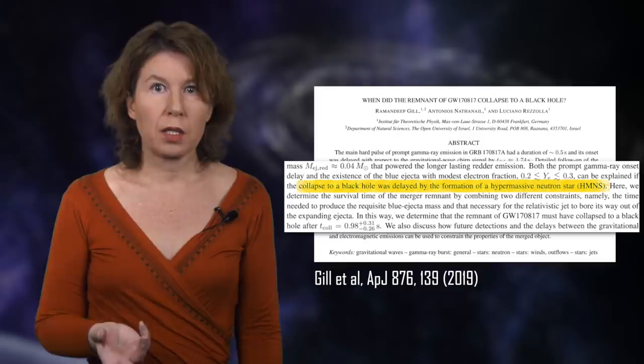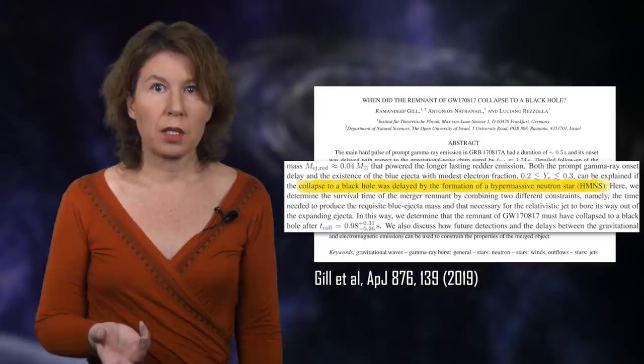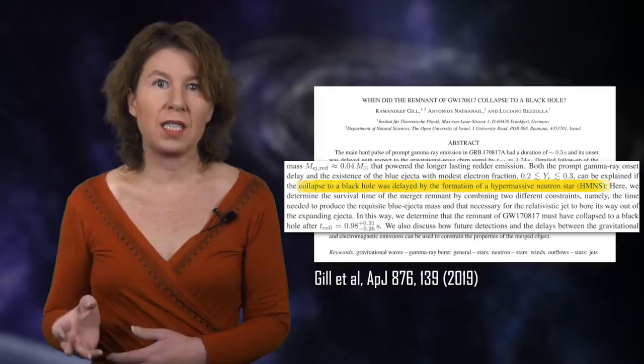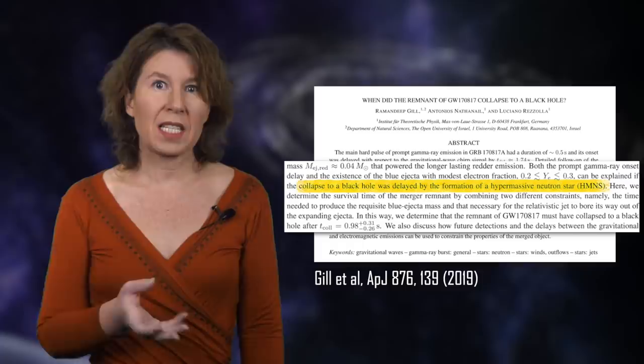Remember, this was a neutron star merger. People from Luciano Rezzolla's group have argued that what happened is that the collapse to a black hole was somewhat delayed. This looks like an echo, but only once, and it's also why the electromagnetic signal came 1.7 seconds after the gravitational wave signal had started.